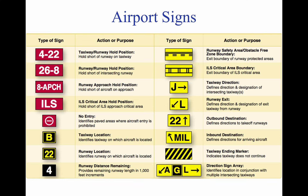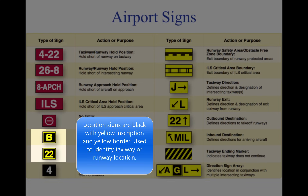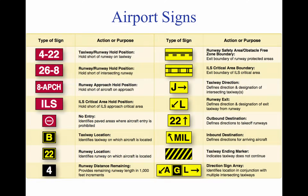There are six types of signs that may be found at airports. The more complex the layout of an airport, the more important the signs become to pilots. This figure shows examples of signs, their purpose, and appropriate pilot action. The six types of signs are: mandatory instruction signs, which have a red background with white inscription and denote an entrance to a runway, critical area, or prohibited area; and location signs, which have a black background with yellow inscription and a yellow border with no arrows, used to identify a taxiway or runway location, boundary of the runway, or an ILS critical area.